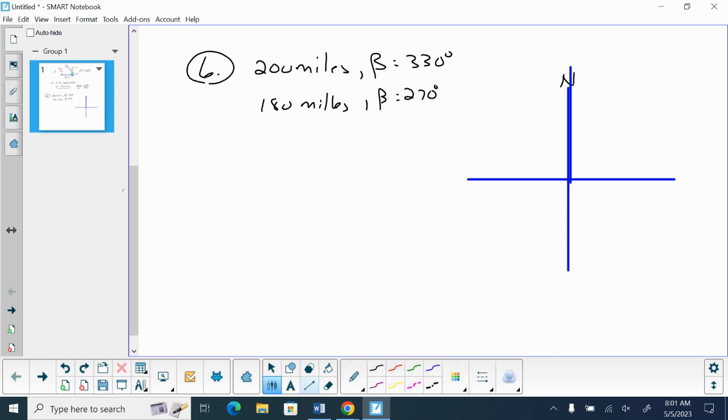So we're going to start up here. So there's 180, there's 270, so we're going to be up in this area somewhere. This would give us a bearing, a rotation, of 330 degrees. And this is 200 miles.